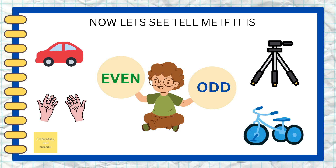The number of wheels on a tricycle — even or odd? Yes, it's also an odd number — it has three wheels. Good job!